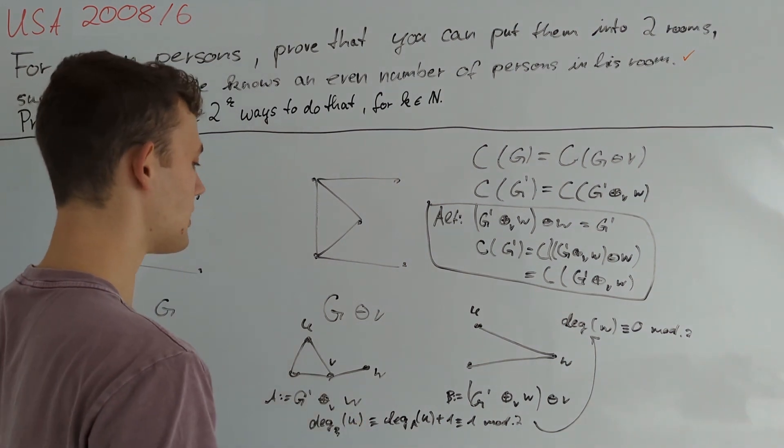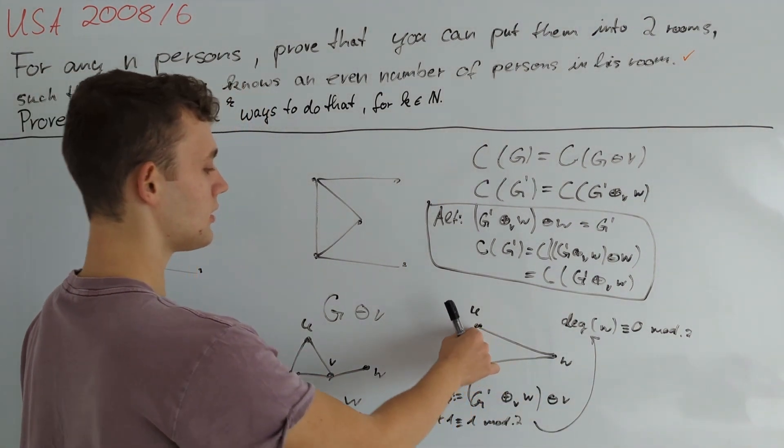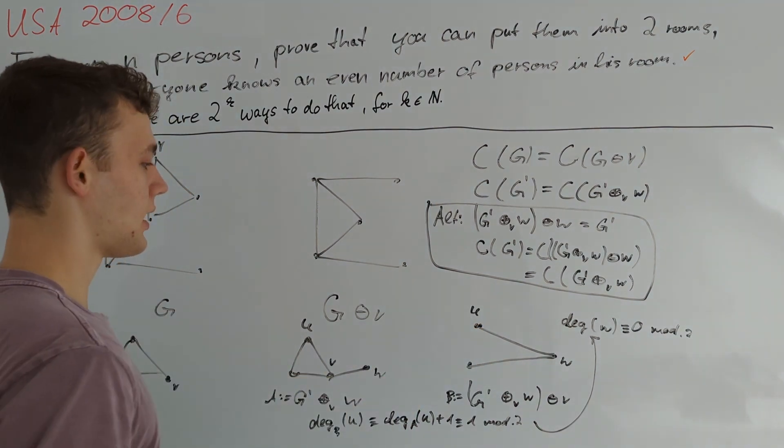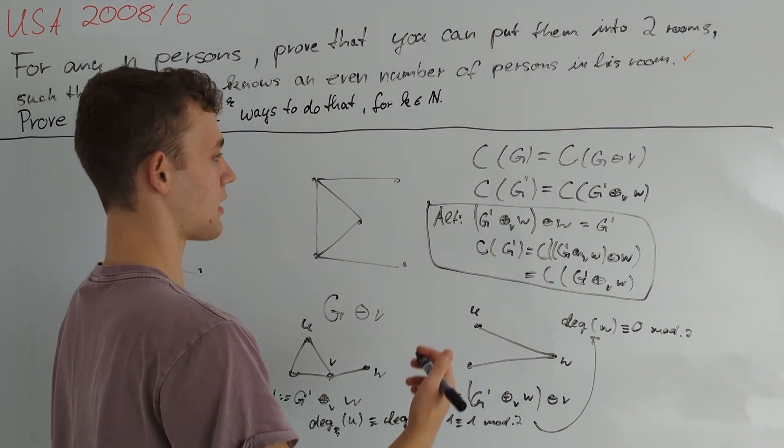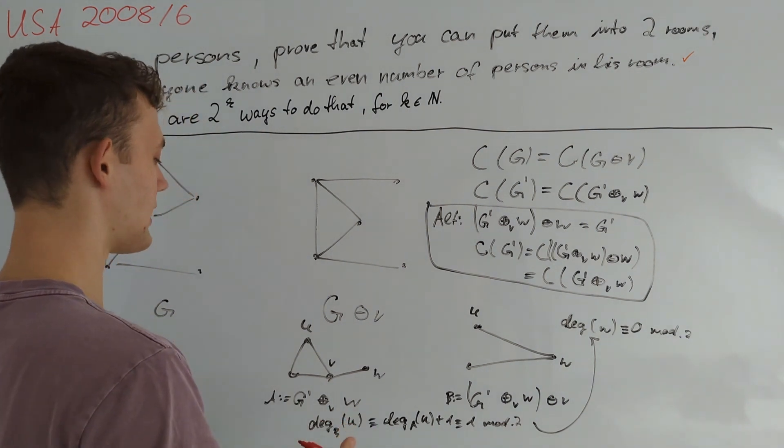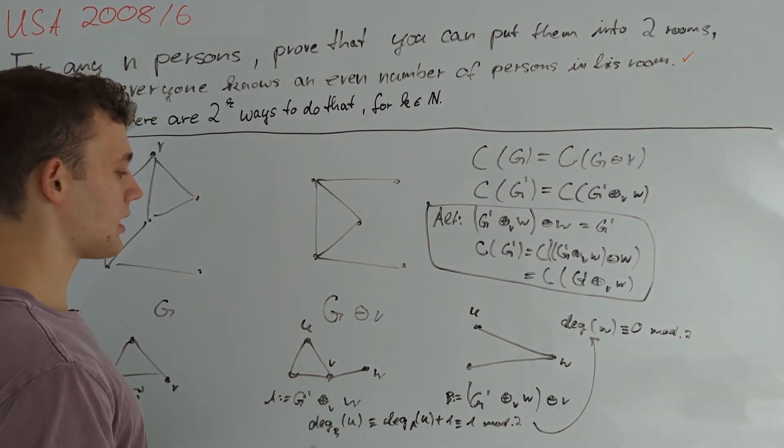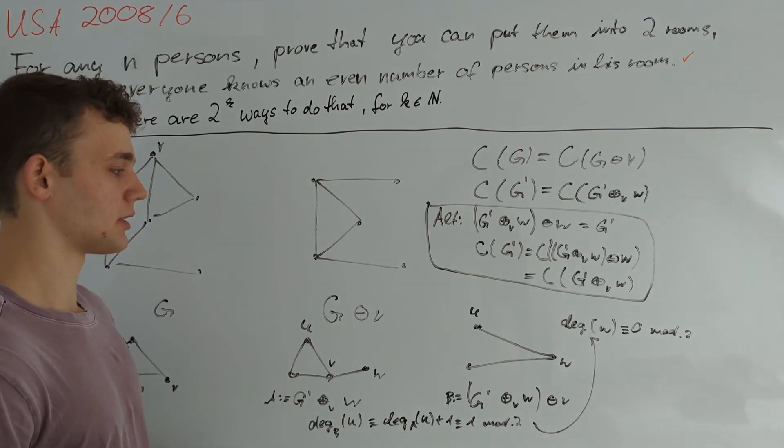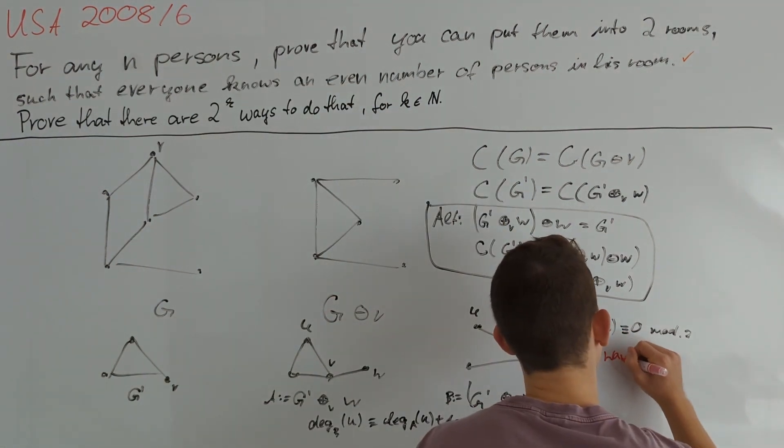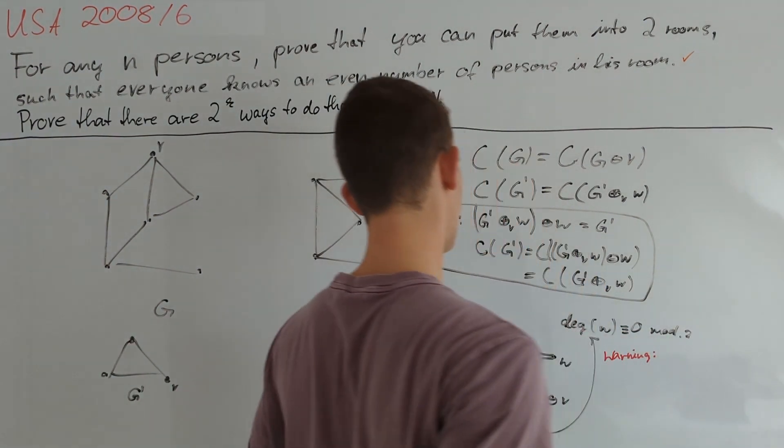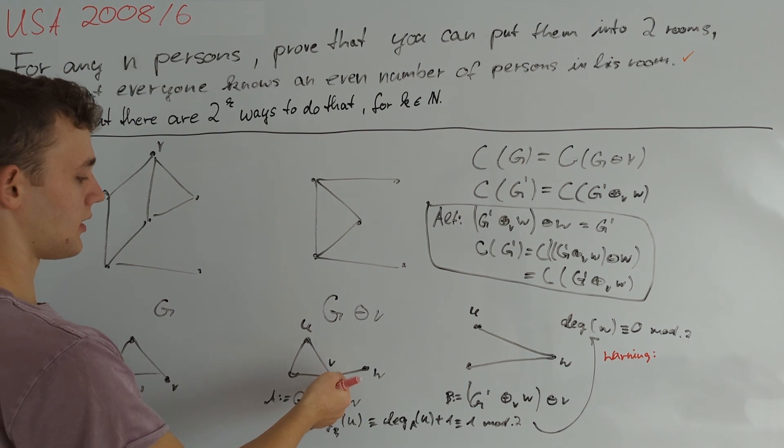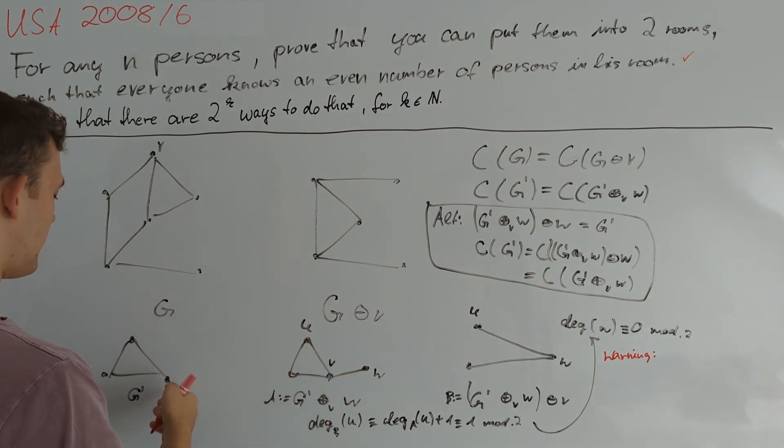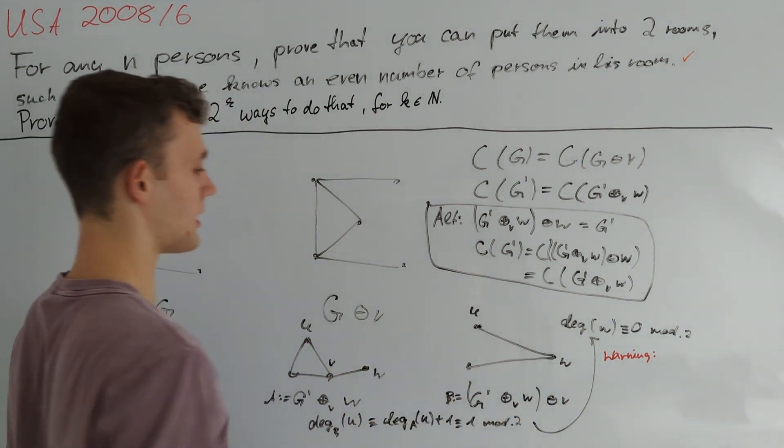And well this is basically enough to finish our induction step because now we know that right here U, any original neighbor of V has odd degree so we can just do another O minus U operation which is invariant under the function C. Now this is really nice and it seems like we can do an inductive step at any point which is kind of contradictory because then we would end up with an empty graph. So I'm going to do a warning and we have to take a look where this induction step fails.